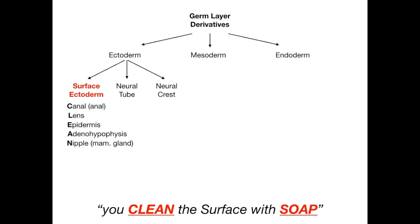C-L-E-A-N tells us: the Anal canal below the pectinate line, the Lens, the Epidermis, the Adenohypophysis, and the Nipple (mammary gland) all come from the surface ectoderm. Then S-O-A-P tells us: Sweat glands, Olfactory epithelium, Auditory organs, and Parotid glands also come from the surface ectoderm. So on test day, remember: you clean the surface with soap — C-L-E-A-N-S-O-A-P — for surface ectoderm, which comes from the ectoderm germ layer.